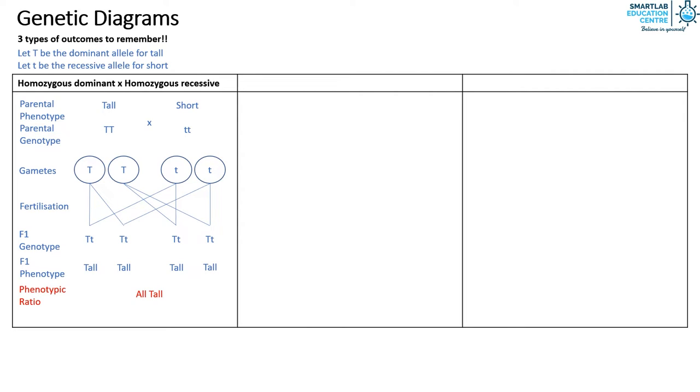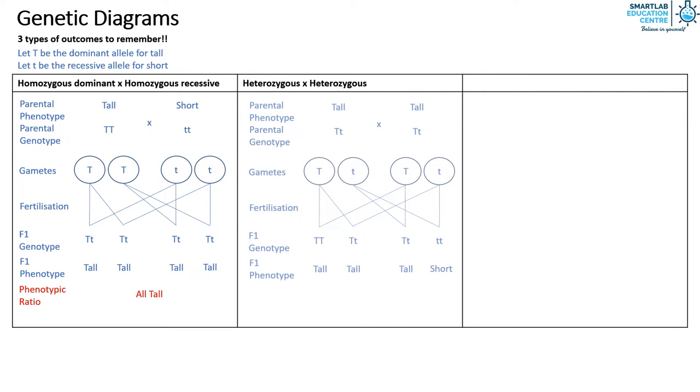In the second scenario where both parents are heterozygous, the genetic diagram is as such. The phenotypic ratio of the F1 generation would be three to one, with three belonging to that of the dominant allele. In this case it would be three tall to one short.